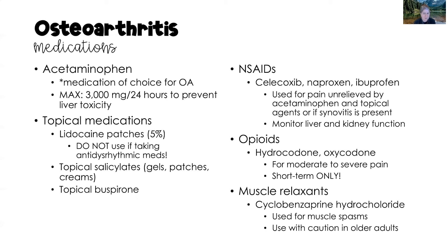Opioids such as hydrocodone and oxycodone are often used when necessary, although we want to try to avoid opioids if possible and really only use them short-term. Some clients with chronic back pain may require long-term opioids, but for the most part we want to limit those to short-term only. We might also see a client taking muscle relaxants, which are used for muscle spasms. However, these must be used with caution in older adults as they can cause confusion.